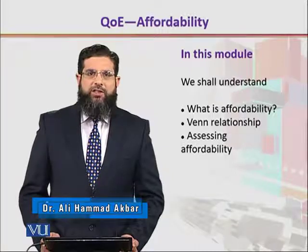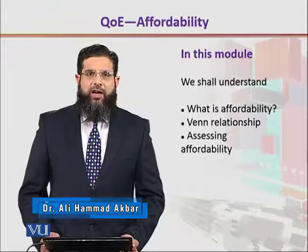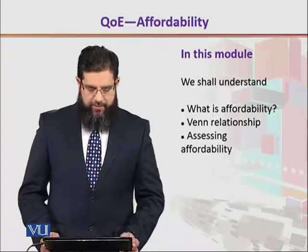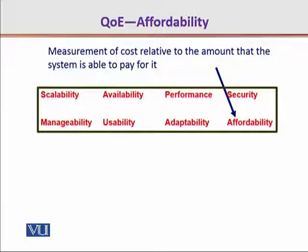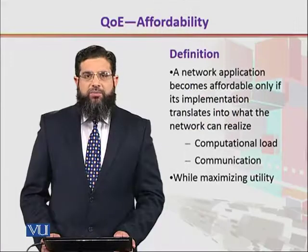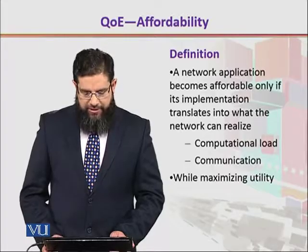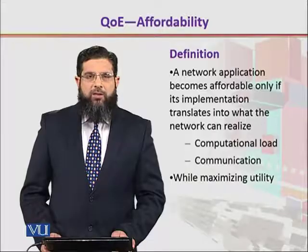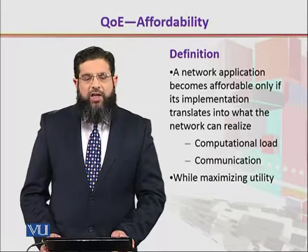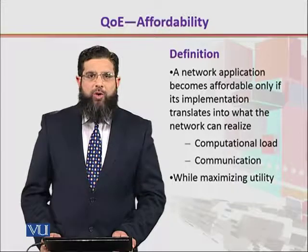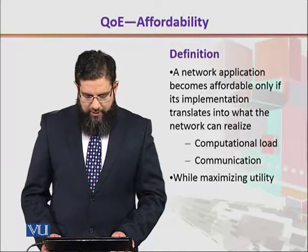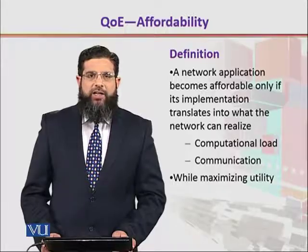We will look at its formal definition, then we will see it from the network's perspective, and we will look at a way to assess it in a more quantitative way. Affordability is actually the measure of the cost relative to the amount that the system is willing to pay for it. The system could be human beings themselves, or the network being deployed to achieve certain serviceability. Formally, a network application becomes affordable if and only if its implementation translates into the network parameters and resources in such a way that the computational load and the communication overhead is within the bounds, while maximum utility is achieved out of it.